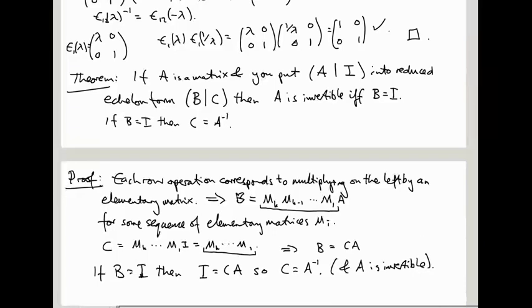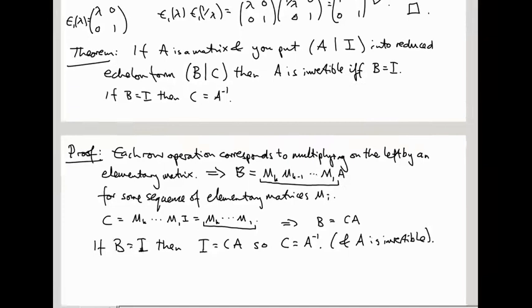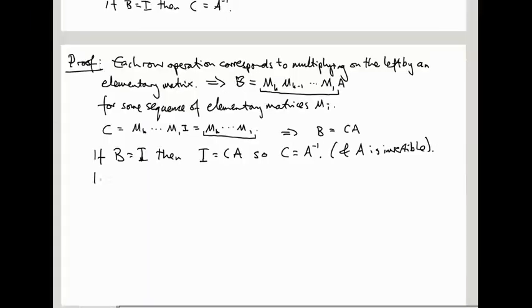We still need to check, however, that when A is not invertible, then B is not the identity. Right? That's what if and only if means. Right? What we've shown is if B is the identity, then A is invertible, and C is A inverse. We also want to show if B is not the identity, then A is not invertible.